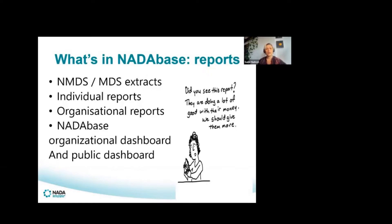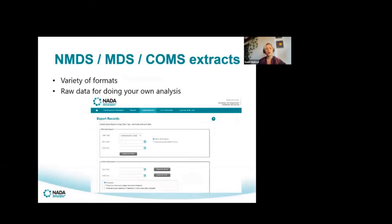There's also the organisational dashboards and the public dashboard available on the NADA website. These bring data to life visually — either specifically to your organisation when you log on, or as a public dashboard of aggregated de-identified data from the previous year. You can extract COMMS, the client outcomes measurement extract, national minimum data set or state minimum data set in a variety of formats — PDF, Word, or Excel — allowing you to specifically explore, analyse, and clean data for your own purposes.